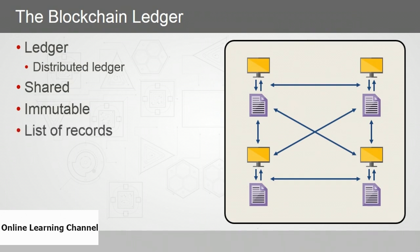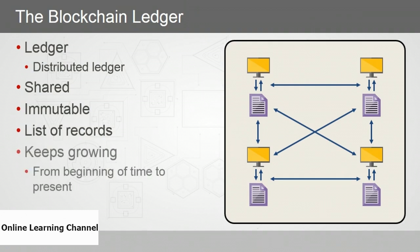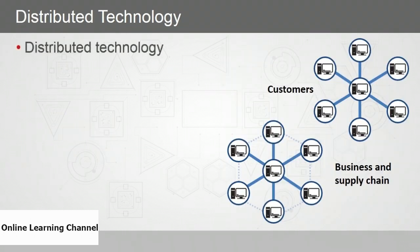When everyone has a copy, it becomes virtually impossible to change everyone's copy, and that's what makes blockchain so attractive to developers and businesses. The blockchain is a complete list of records, and it keeps growing as new records are added. The blockchain ledger contains all the records from the beginning of time to the present.